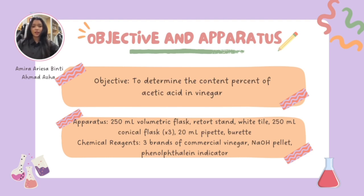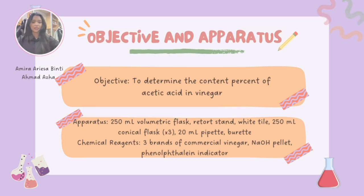The apparatus required includes a 250 mL volumetric flask, wash bottle, white tile, three 250 mL conical flasks, a 20 mL pipette, and a burette. Three brands of commercial vinegar, sodium hydroxide pellets, and phenolphthalein indicator were also used as chemical reagents.